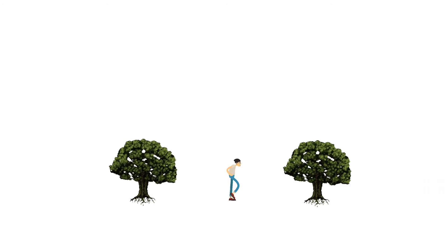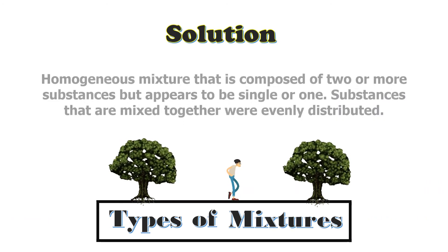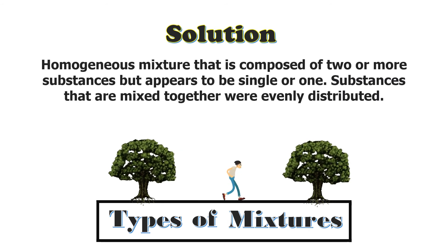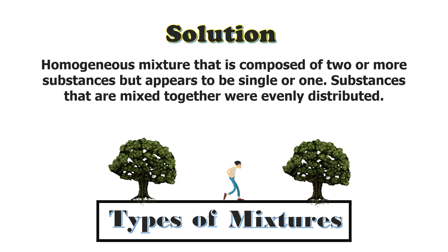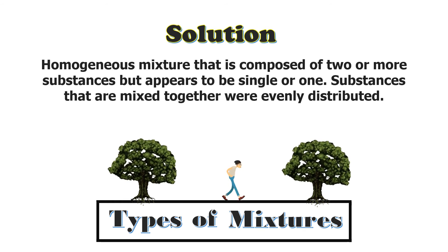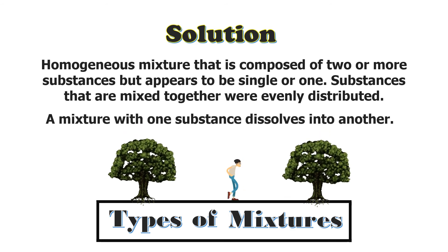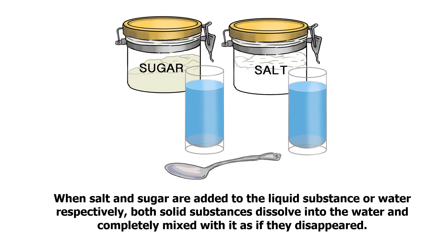Moving on to the types of mixtures. Solution: it is a homogeneous mixture that is composed of two or more substances but appears to be single or one. Substances that are mixed together are evenly distributed. A mixture with one substance dissolves into another. For example, when salt and sugar are added to water, both solid substances dissolve into the water and completely mix with it as if they disappeared.